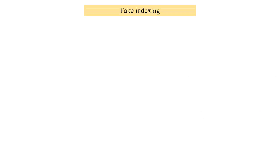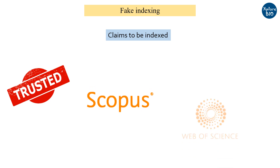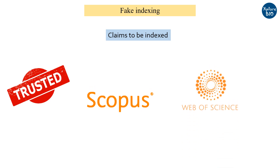Another way to check if a journal is predatory is by verifying its indexing. Predatory journals often claim to be indexed in databases such as Scopus or Web of Science, but they may not actually be included in these indexes or may have fake indexing information. Check the trusted databases' websites to confirm if the journal is genuinely indexed.